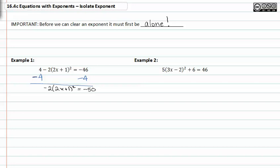Now we can divide by negative two on both sides. This gives me what's in parentheses and the exponent. So I'm going to have (2x + 1)² = 25.